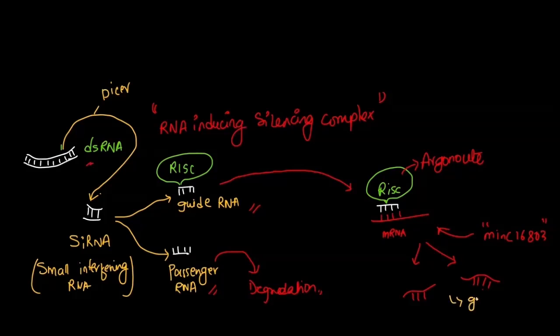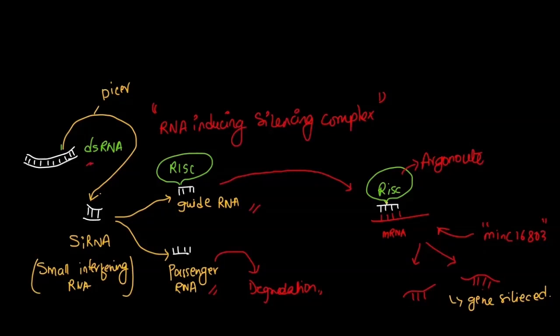Thus, this particular gene is now silenced. This is how RNA interference works. This is all happening inside the nematode, and since this particular gene is not being able to express in the nematode, this nematode will no longer be able to survive inside the transgenic host — this pest-resistant host plant.